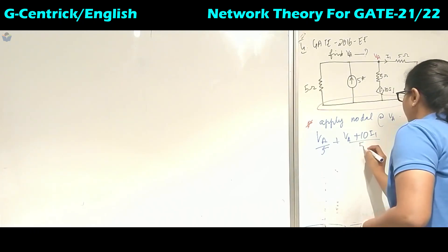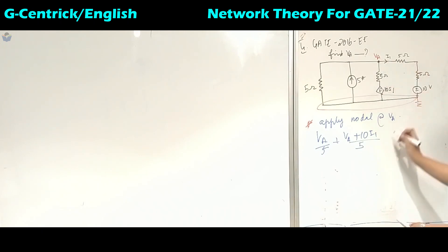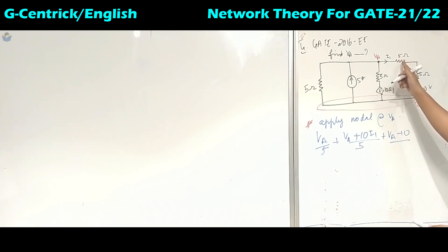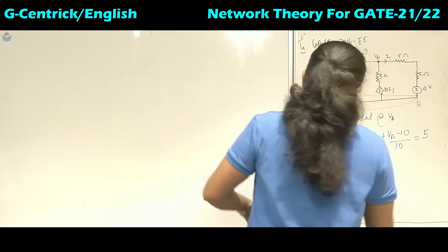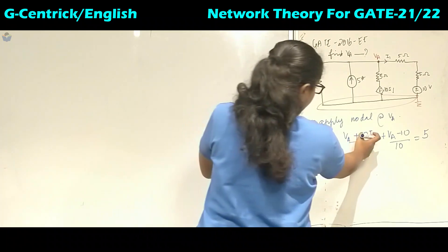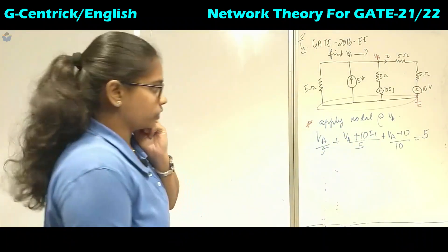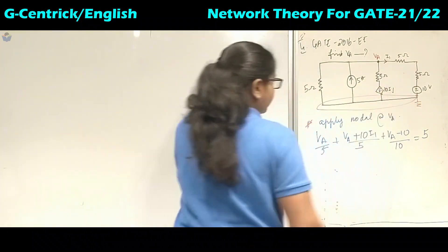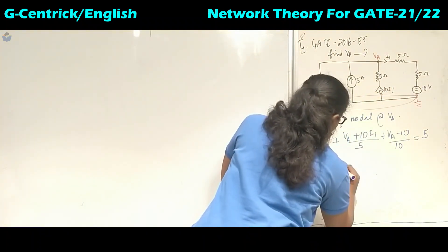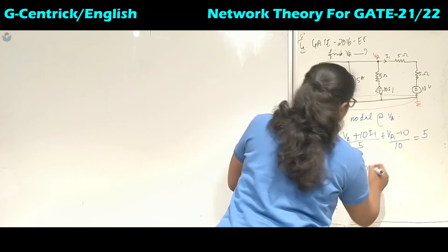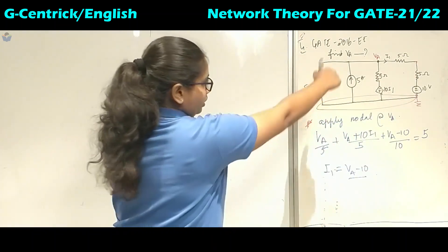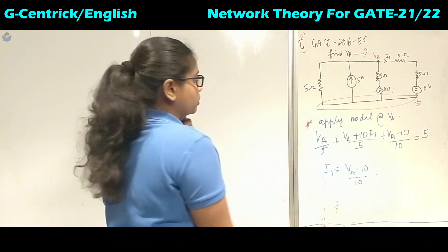So plus 10vi upon 5 and this is minus VA. Here there is one more minus 10 upon — the total resistance is 5 plus 5, which is 10 — and there is one incoming current that is 5 amperes. Now we have to replace this i1 because there are two unknowns and we do not have two equations. So to replace i1, we will apply Ohm's law: i1 is equal to VA minus 10 divided by the total resistance, which is 5 plus 5 = 10.